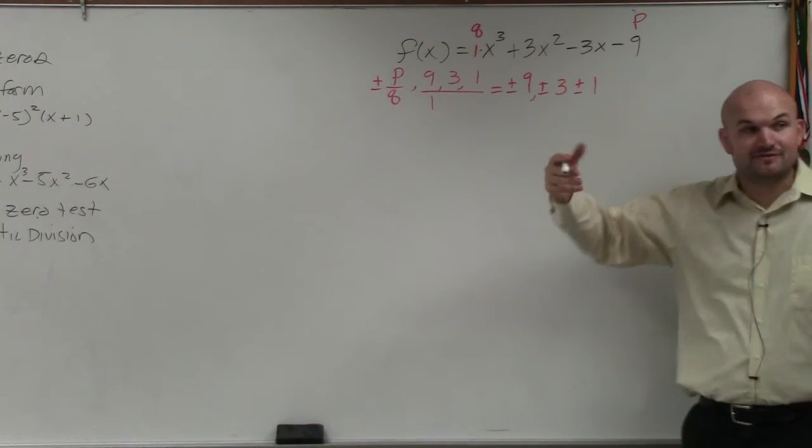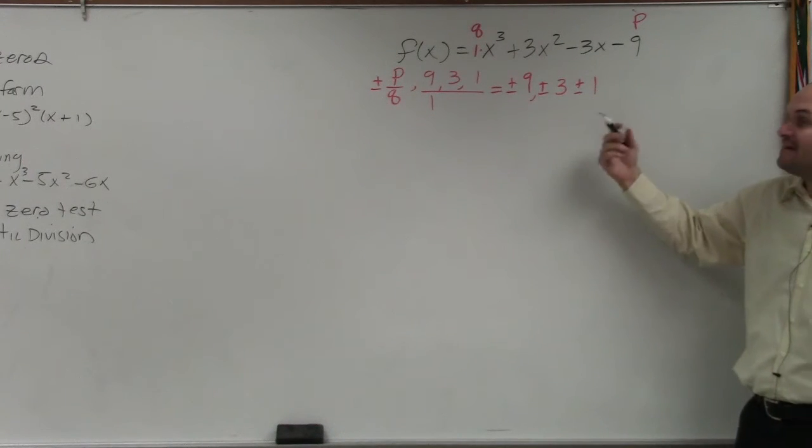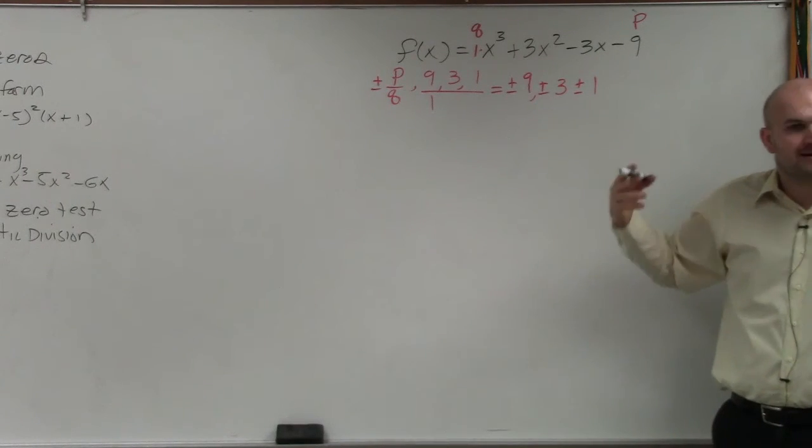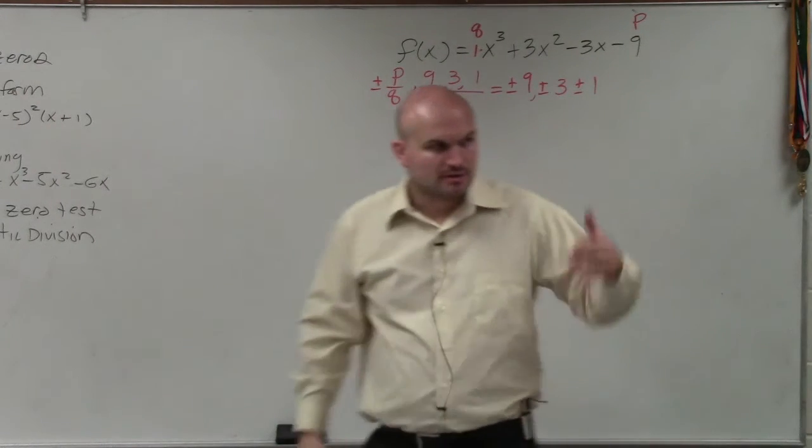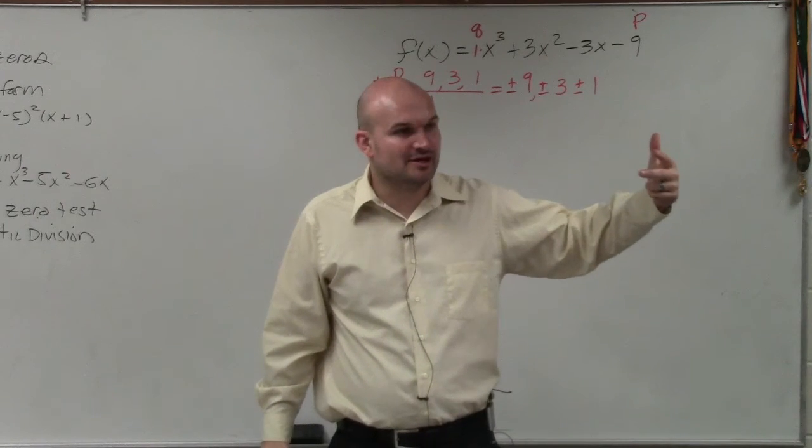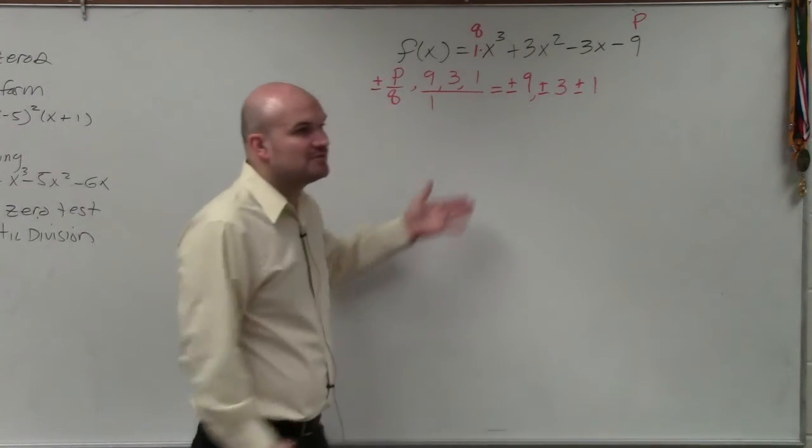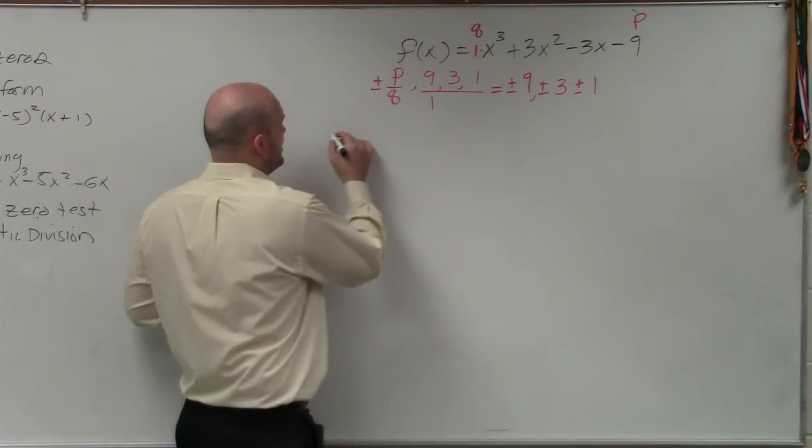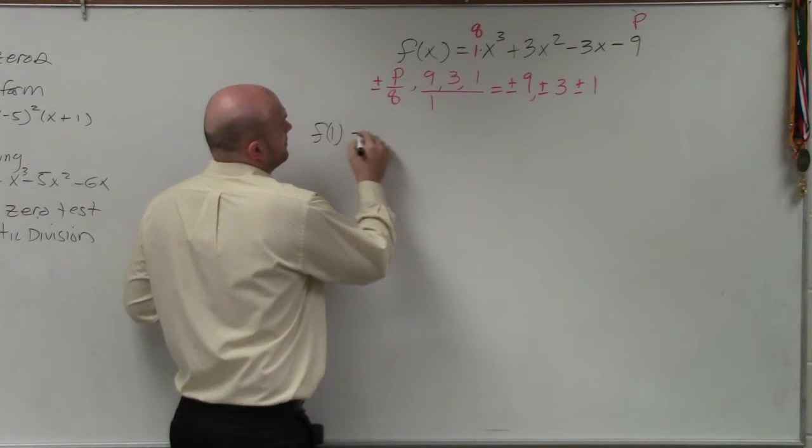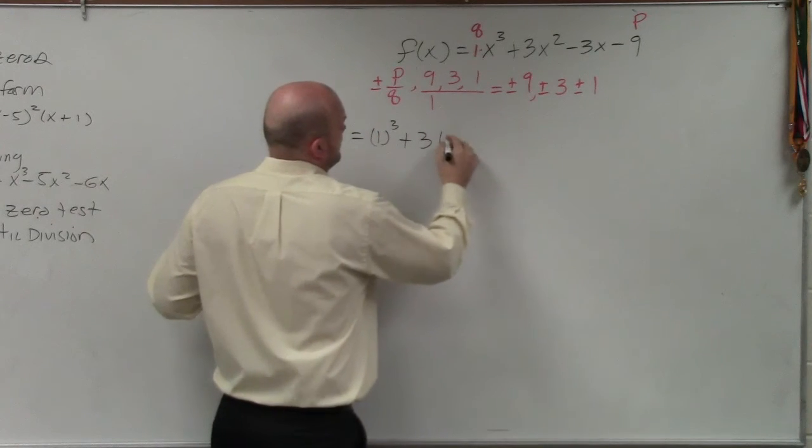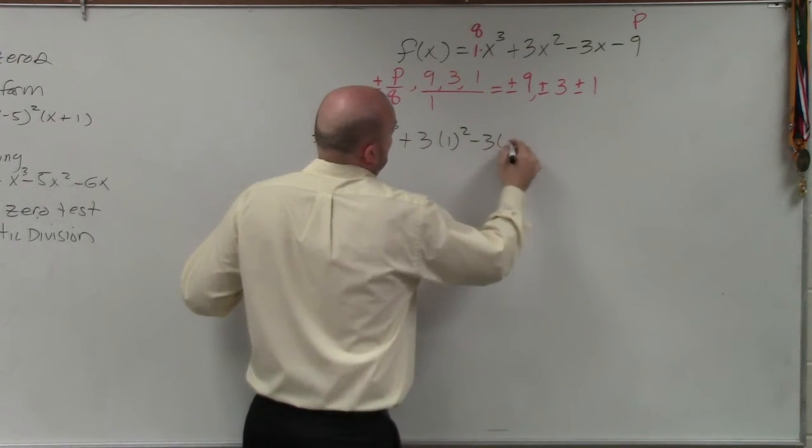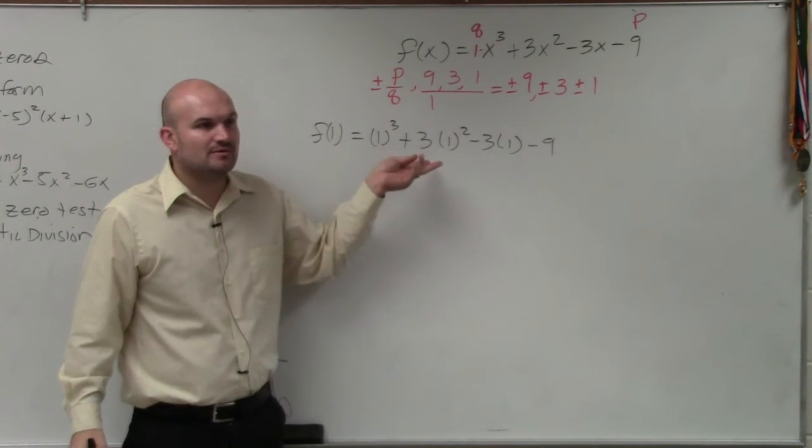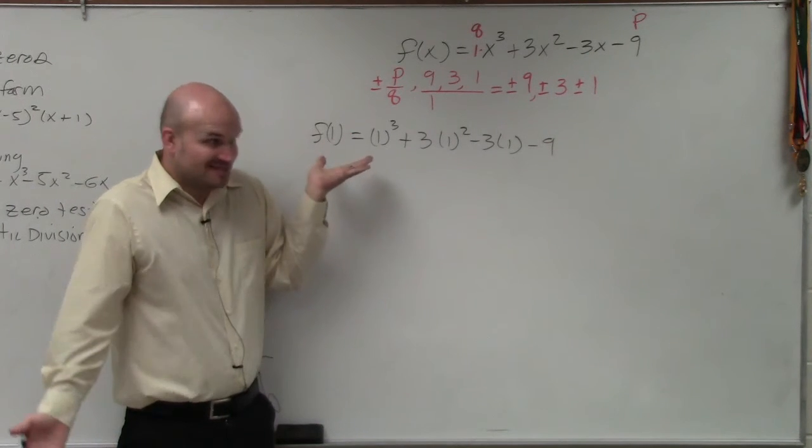So if I was going to have to graph this and I have a rational zero, one of these has to be that number. Now there's two different ways you guys can test if the zero works or not if you don't have a graphing calculator. The first way is to use the factor or remainder theorem. Can you guys just plug in f of one. What happens if this equals zero? What does that tell you about one? It's a zero.